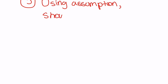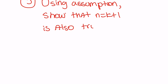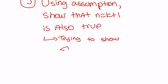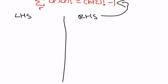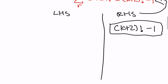Then the next thing is: using the assumption, show that n equals k plus one is also true. Here's a little trick my teacher told me — you can always write out what you're trying to show. Your new sigma function is going to have k plus one on top, and this will equal k plus two factorial minus one. I'll create my LHS and my RHS, and remember the RHS is just what I'm trying to show: k plus two factorial minus one. I'll put a nice box around it.